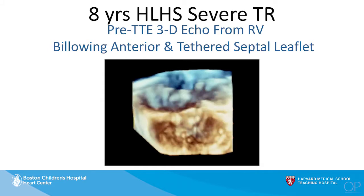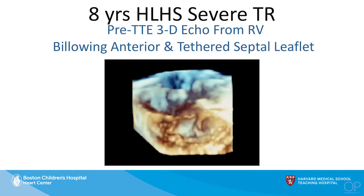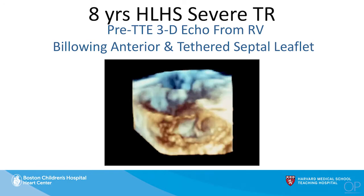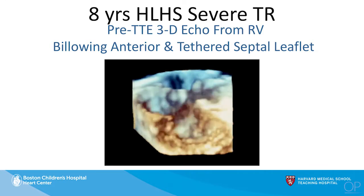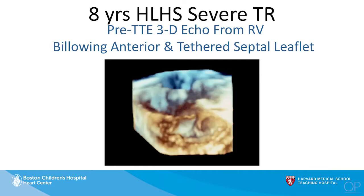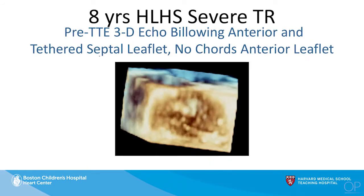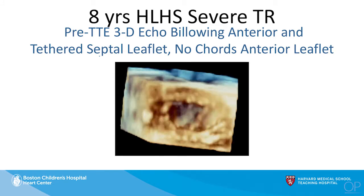Because it's a three-dimensional data set, if we rotate the plane and look at the RV from the apex up towards the under-leaflet of the valve, you can see a portion of it clearly protruding up into the right atrium, almost billowing up there. You can see a significant zone of non-coaptation between the anterior and the septal leaflet. We started to get the impression that the septal leaflet was severely tethered. Here in the cross-sectional image of the valve from below, you can see a very significant zone of non-coaptation between the anterior and the septal leaflet.